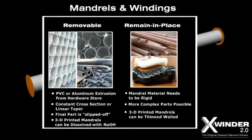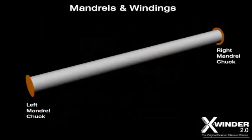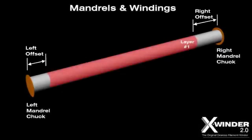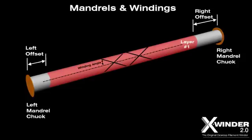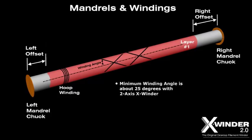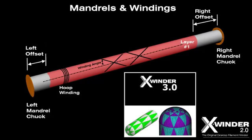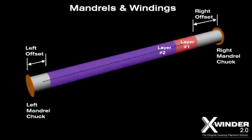Remain-in-place mandrels need to be built from a rigid material and since removal is not required, these parts can be more complex in shape. Thin wall 3D printed parts can be used as mandrels. If the final part is heat gun cured or cured in an autoclave under heat and pressure, the mandrel material should stand up to these rigors. The mandrel is supported on either end by the left and right mandrel chucks and each layer can be offset any distance from the chuck ends. The layers are defined by a winding angle of the filament relative to the central axis, and winding angles can range from 90 degrees or hoop winding down to about 25 degrees on the two-axis version of the X-Winder. Zero degree winding angles and polar or spherical end caps will be possible with the X-Winder 3-axis version, an upgrade to the X-Winder 2 that will be offered later this year.